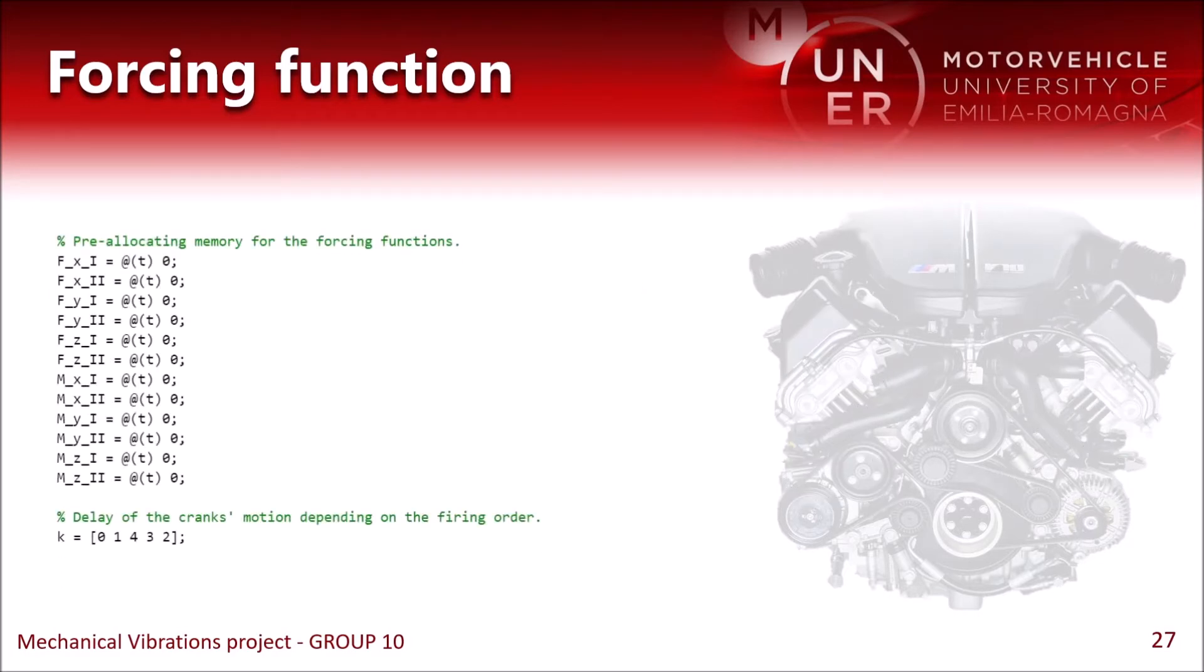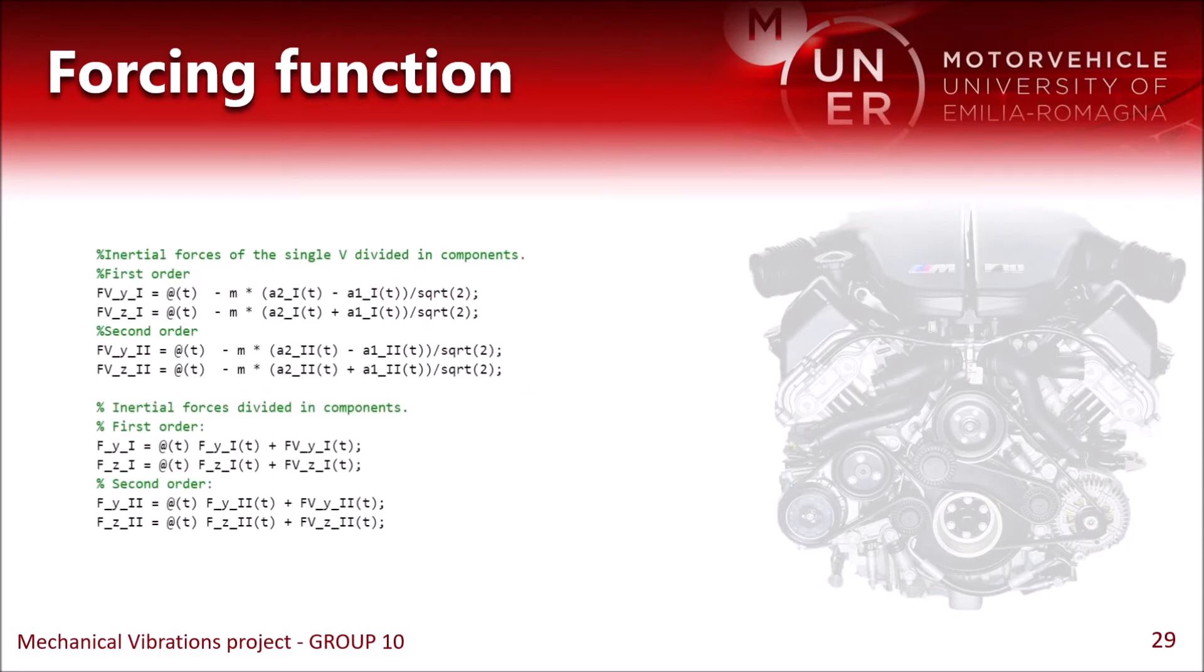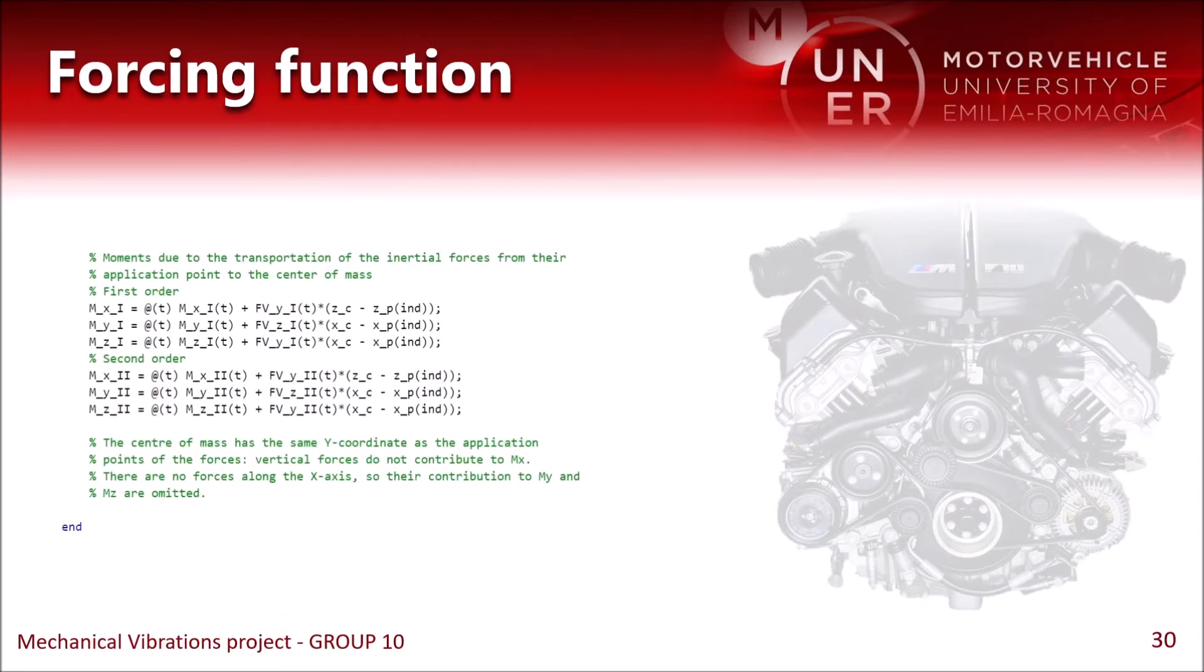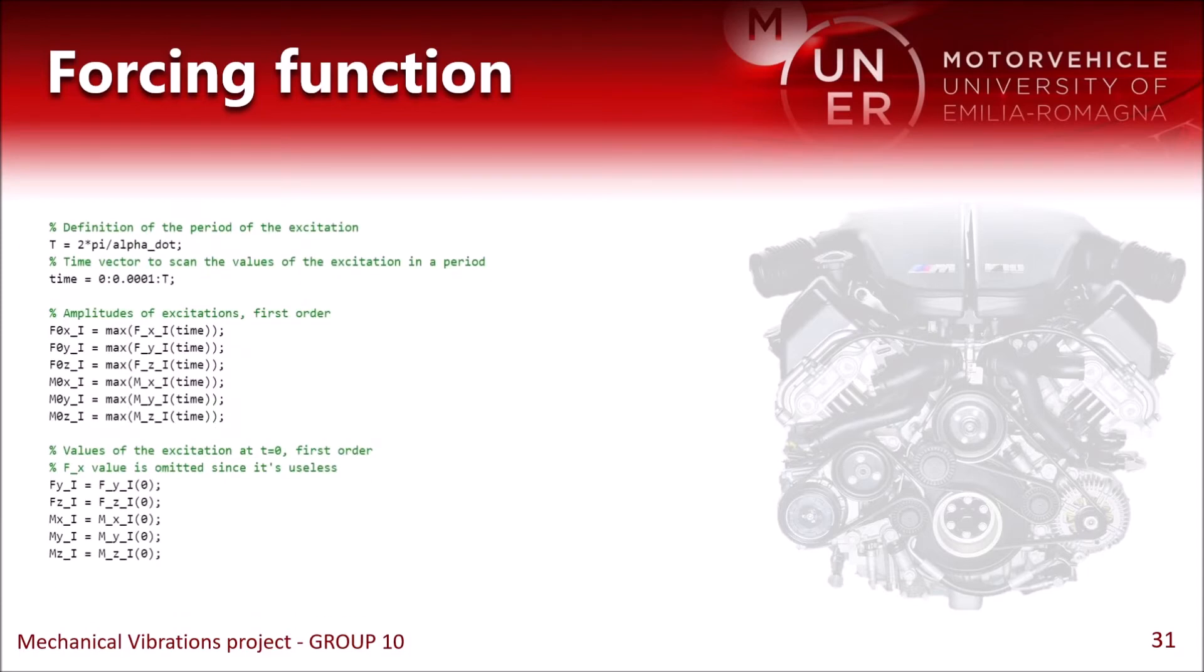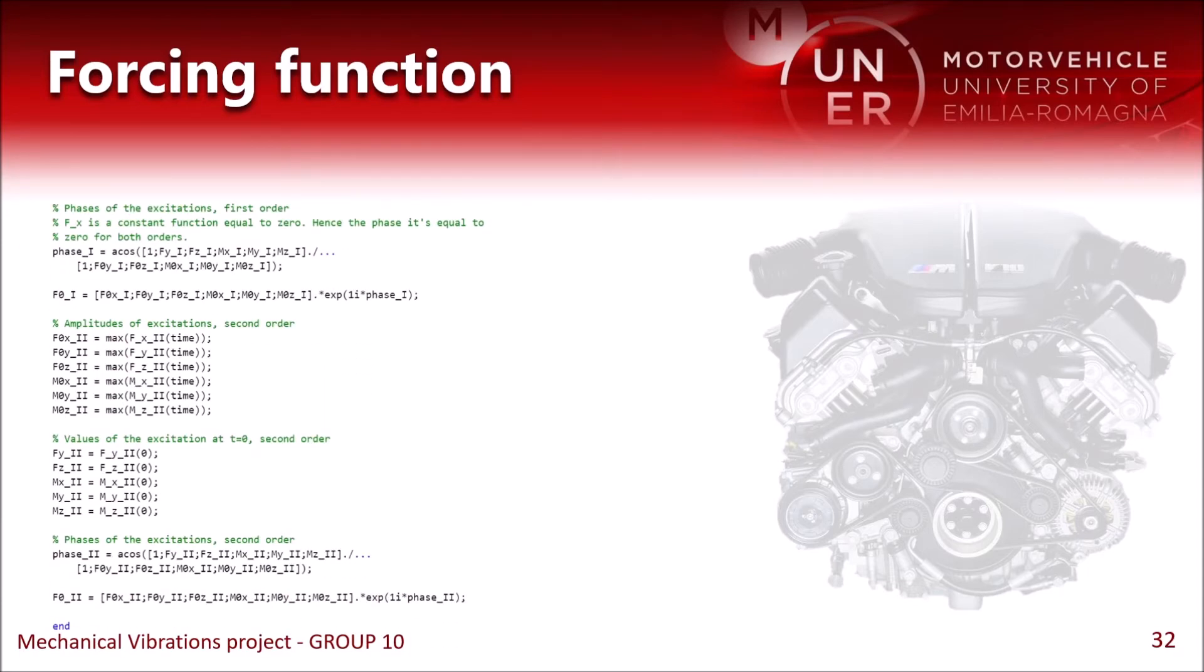Here we pre-allocate memory as we will cycle through each V of the engine within a loop. We define the accelerations as anonymous functions, functions of time. We do the same for the forces and for the moments, and we put together the amplitudes and the phases to form a complex vector for the forcing.